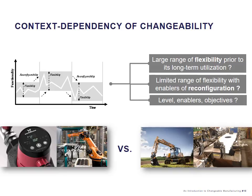This context-dependency means we want to design changeable manufacturing systems appropriate for the certain manufacturing context. In doing this, we need to determine whether we want to invest in a large range of flexibility prior to its utilization, or implement a limited range of flexibility and enablers of reconfiguration so we can change the system dynamically over time. Lastly, we want to understand which type of enablers to use, which level they should be implemented on, and the reason behind this. This context-dependency is what we will talk a lot more about during our lecture.